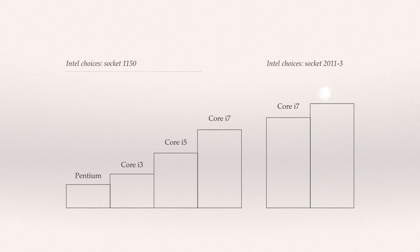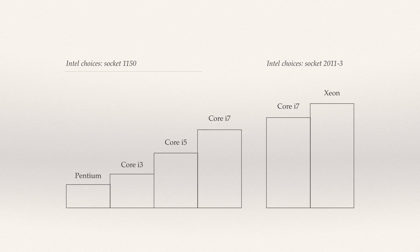Then there are Xeon processors, which offer extreme performance with very high power draw. They are extremely expensive but have great reliability. Again, no integrated graphics processor, so buy your graphics card separately. They are aimed solely at professional content creators and server use. Although they will do well at gaming, gaming is discouraged because they're actually not as good as normal consumer processors for that purpose.